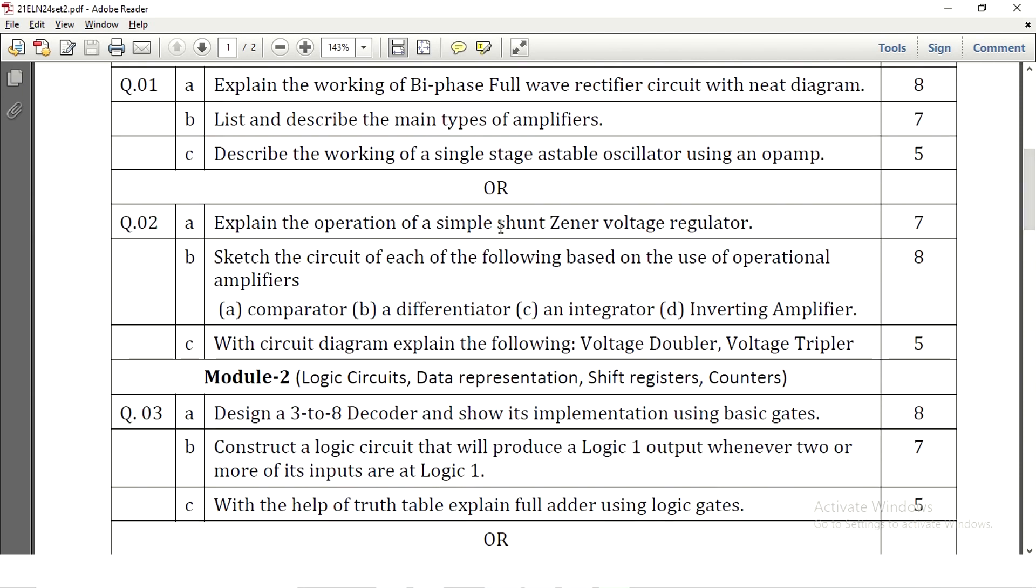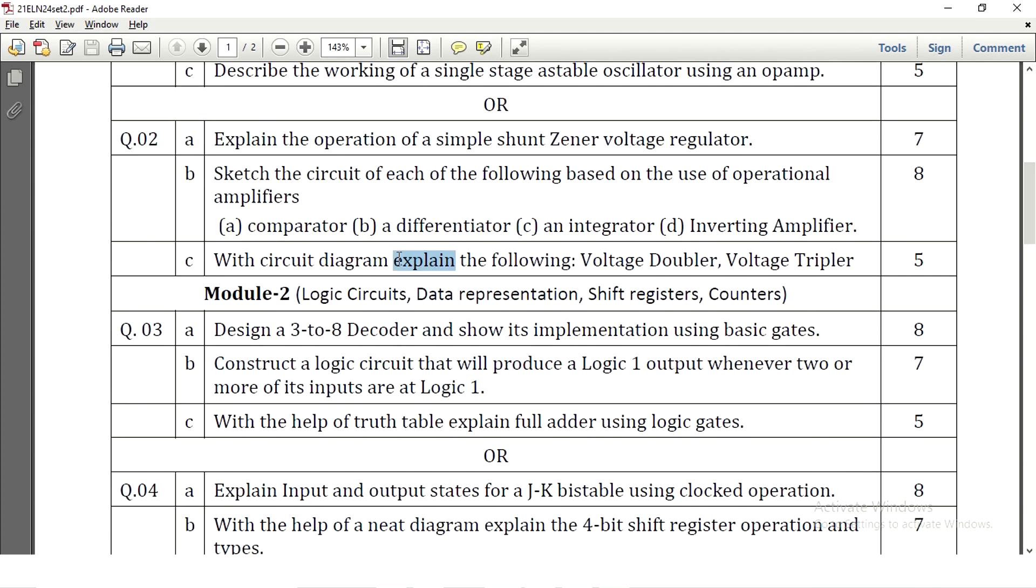And then explain the operation of simple shunt zener diode zener voltage regulator, that means voltage regulator using zener diode need to be explained. Here we have few expressions that need to be written. Sketch the circuit of following based on the use of operational amplifiers: a comparator circuit, differentiator, integrator, and inverting amplifier is asked here. So don't get confused with the difference amplifier and the differentiator, carefully you need to answer this. Here four circuits need to be written and the expression for those, output expression has to be written. With a circuit diagram explain the following voltage doubler and voltage tripler. Voltage doubler and voltage tripler circuit is asked for 5 marks. So here just circuit diagram is enough. In the circuit itself you show where actually the doubling voltage and the tripling voltage will be measured.